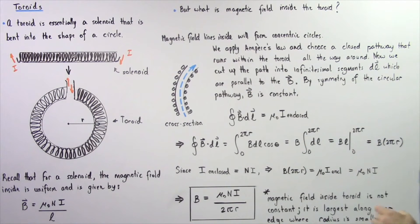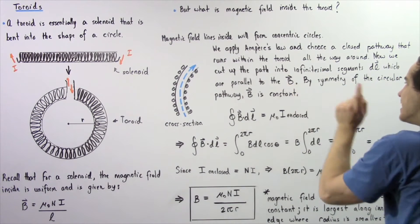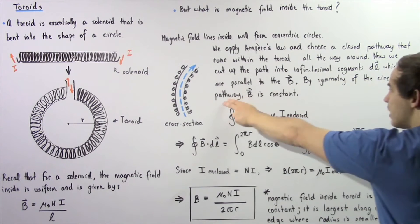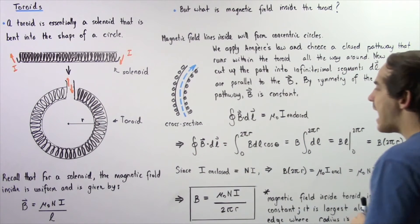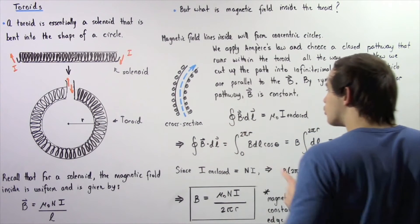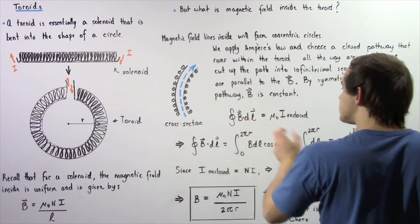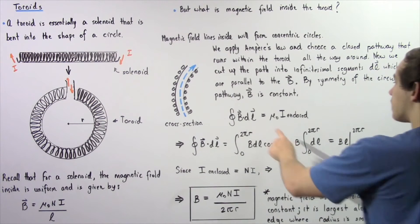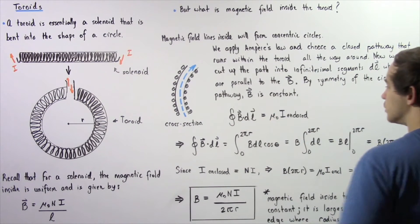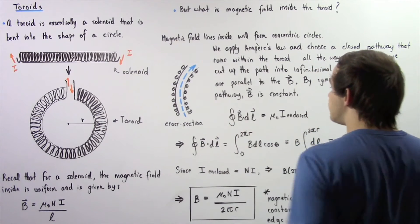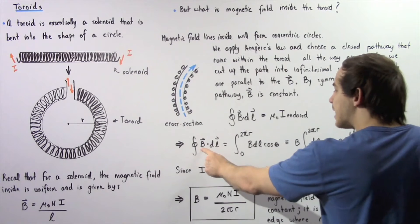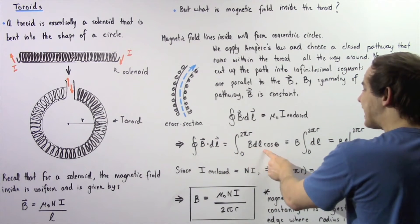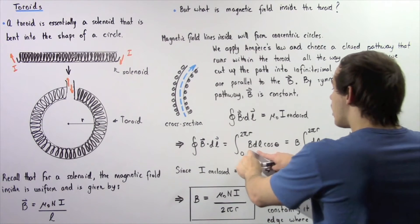We cut up the pathway into infinitely small segments dl which are parallel to the magnetic field B. By the symmetry of our chosen circular pathway, B around the pathway is exactly constant. Ampere's Law states that the closed integral of the dot product of vector B and infinitesimal segment dl equals the product of the permeability of free space and the enclosed electric current. Evaluating the left side: by definition of the dot product, it equals the product of the magnitudes of the two vectors multiplied by the cosine of the angle between them.